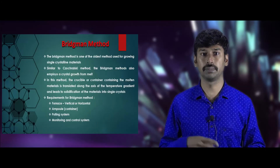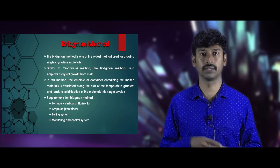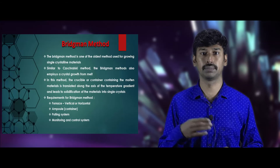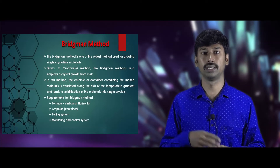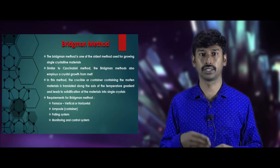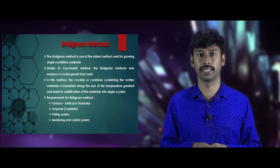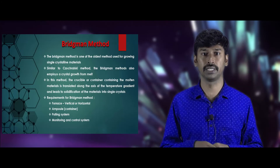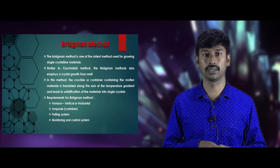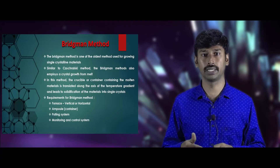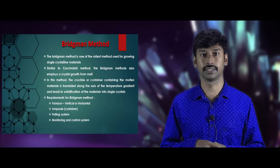The Bridgman method is one of the oldest methods for the growth of single crystals from the melt. Similar to the Czochralski method, the Bridgman method is used to grow single crystals from the melt. In this method, the container or crucible containing the molten material is translated along the temperature gradient, leading to solidification of the material into single crystals. The requirements for the Bridgman growth process are: a furnace (which may be vertical or horizontal), a container or crucible, a pulling system, and a controlling and monitoring system.